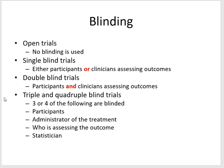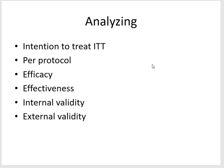Blinding: single and double blinding involve blinding the participant and the outcome assessor. Triple blinding also blinds the people doing the analysis so they can't cheat. Quadruple blinding additionally blinds the administrator of the treatment. We usually think of double and triple blinding, where the statistician is also blinded during analysis.